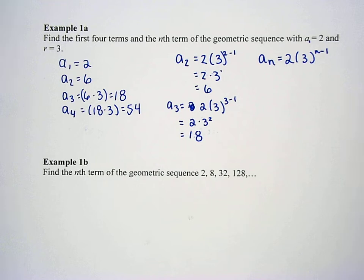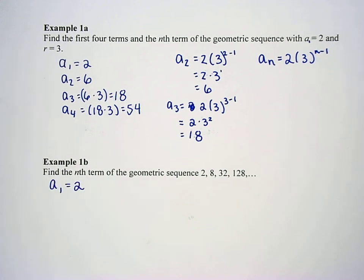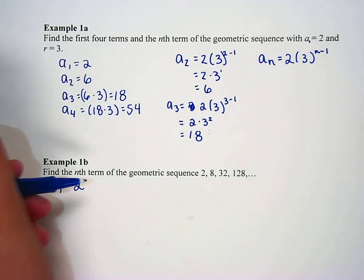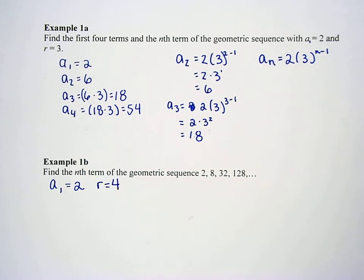Alright, example 1b, if your hand's hurting just let me know. Find the nth term of the geometric sequence that's 2, 8, 32, 128. So first thing, let's write down what the first term is. So what's a sub 1? Write down a sub 1 equals 2. Second thing is, what's the common ratio? What are we multiplying by each time to get the next term?